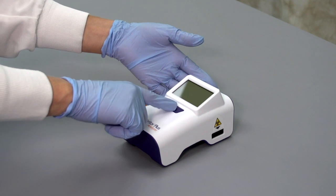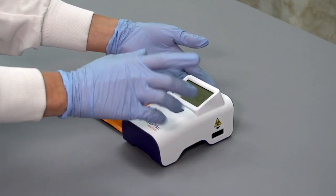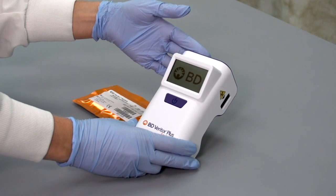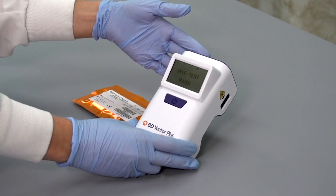To power the analyzer, press the center of the blue power button on the face of the analyzer and release. The LCD screen will show the BD logo during startup.